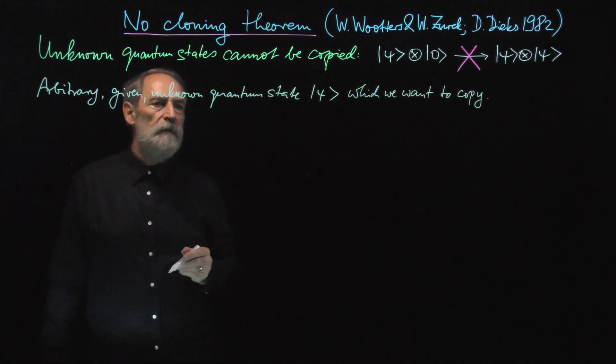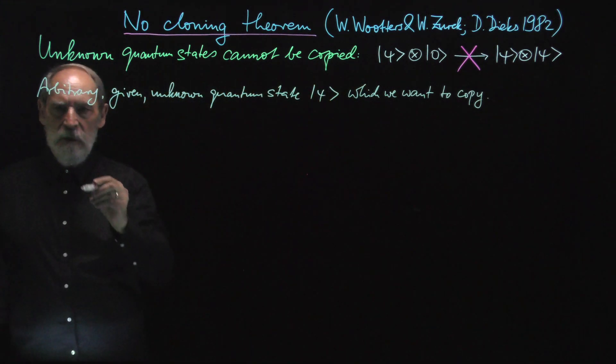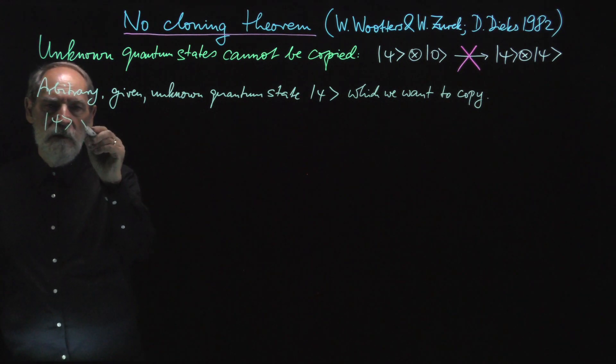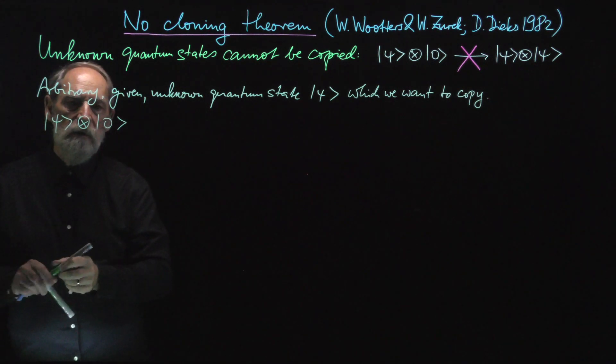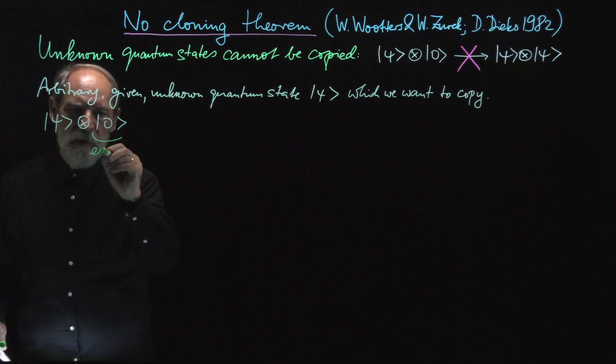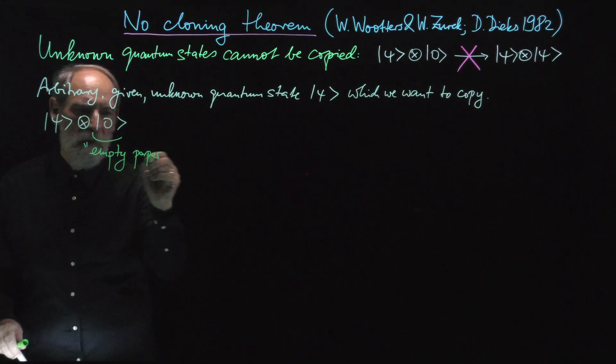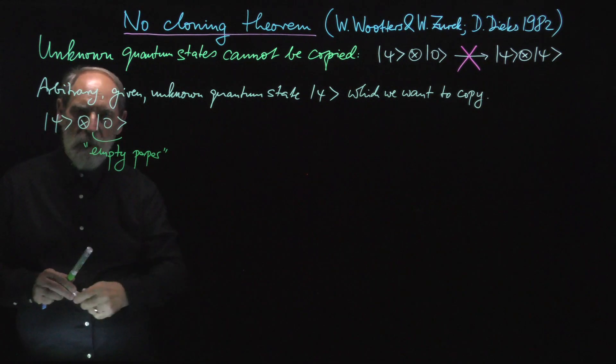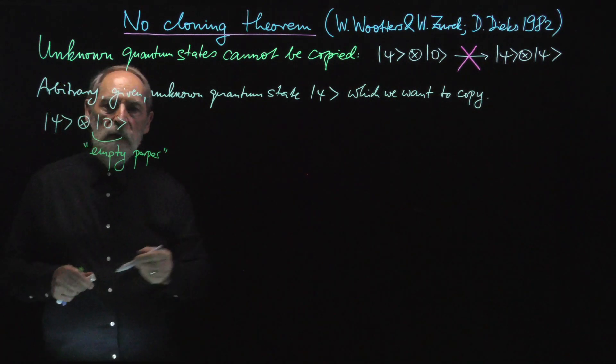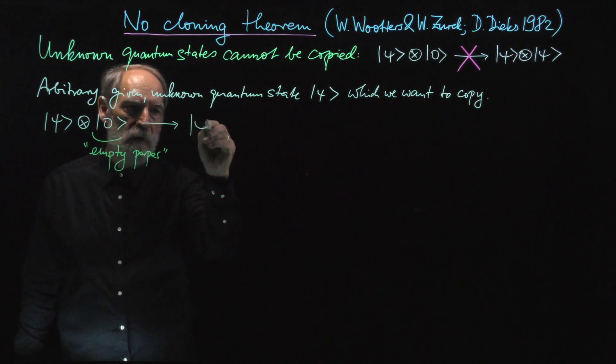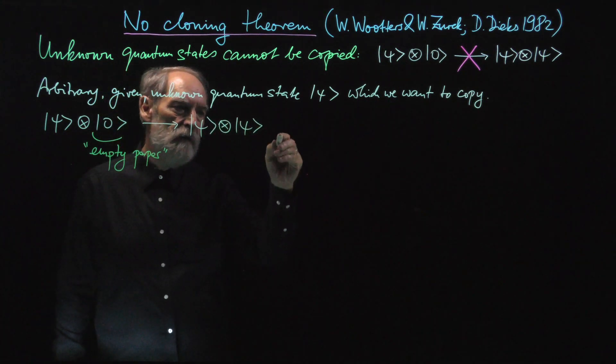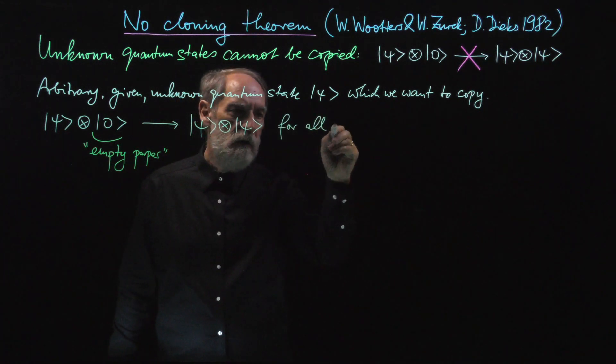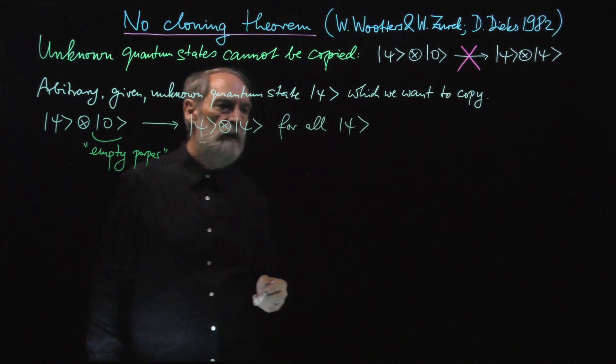So for the copy we need an empty piece of paper, so to say. So we have psi and this is the empty piece of paper. And now this should be converted into two versions of psi for all ket psi.